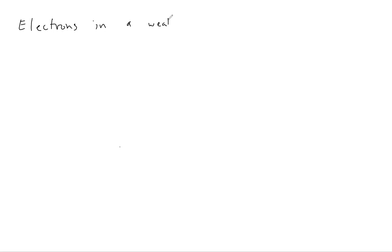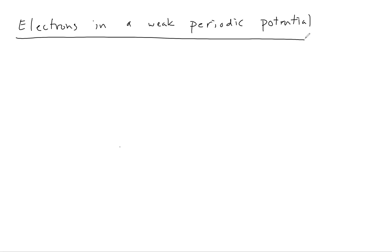Hi everyone, welcome back. Let's wrap up our discussion of electrons in a weak periodic potential. Over the last two mini lectures, we've talked about this problem in some detail. We talked about the case where the unperturbed levels are non-degenerate — in this case, we have a shift of the perturbed levels that's second order in the potential. We also talked about the case where the unperturbed levels are degenerate, where there is a linear shift of the perturbed energies in the potential, so there's a much stronger effect. In this mini lecture, let's break this down and give a rather simple example so you can understand what's going on.